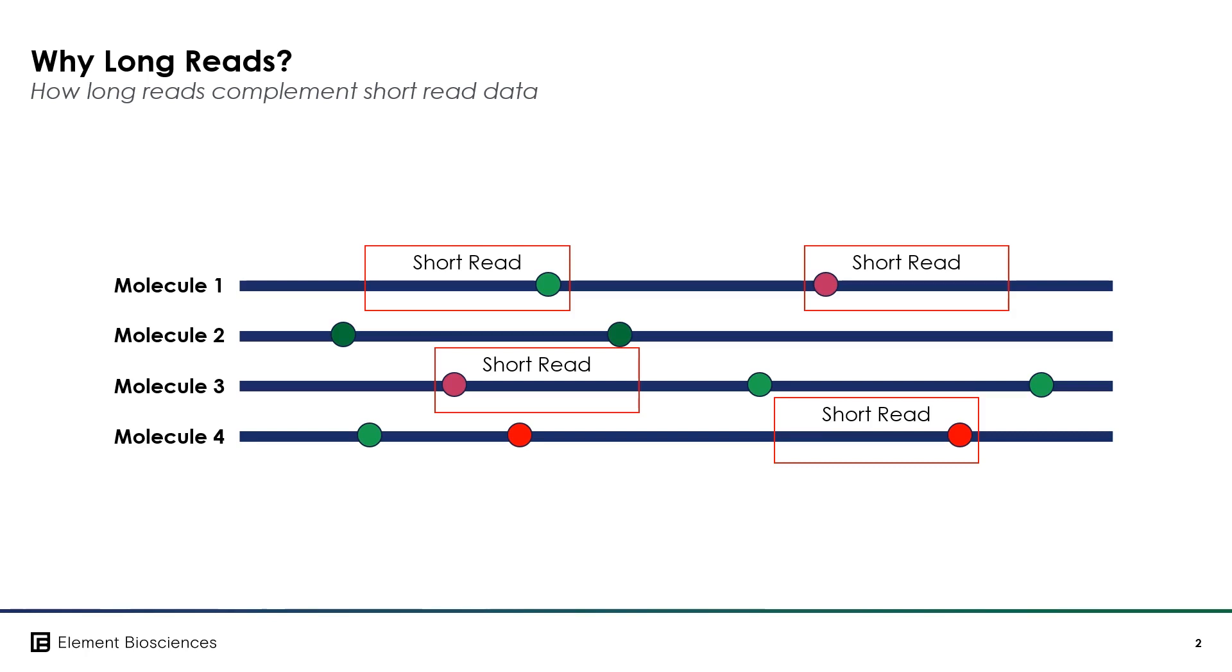In the example on the screen, Molecule 1 has two variations in its sequence which are covered by independent short reads. Using standard short read technology, it's impossible to correlate that those particular unique variations originate from Molecule 1, as opposed to Molecule 2, 3, or 4. And the same can be said if a matching variation occurred on two separate molecules.